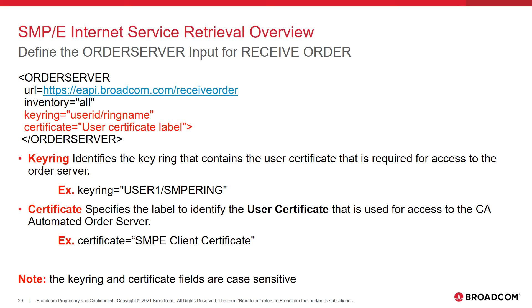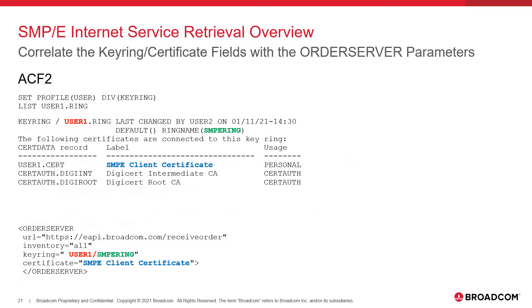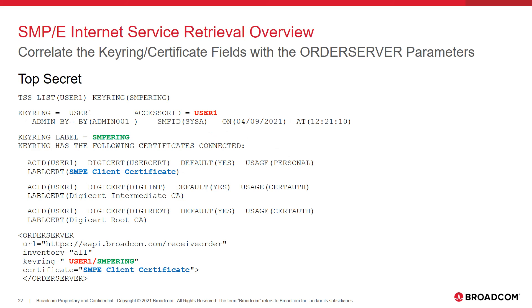The following slides will show where to find the information required for the keyring and certificate parameters in the event you need to backtrack to find the information. In ACF2, issue a list command for the keyring — the color coded information corresponds to the parameters needed for the keyring and certificate fields. In Top Secret, issue a TSS list command for the keyring — the color coded information corresponds to the parameters needed for the keyring and certificate fields.